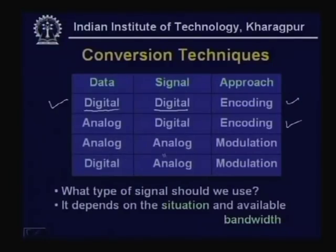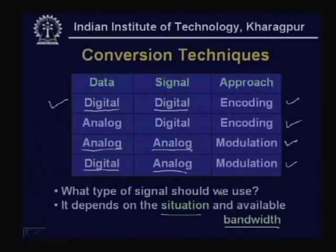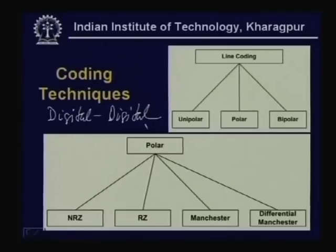On the other hand, whenever the signal is analog in nature — whether the data is analog or digital — the technique is known as modulation. The type of signal to use will depend on the situation, bandwidth, and the transmission media being used. Now let us look at the encoding or coding techniques. For digital-to-digital conversion we use what is known as line coding.